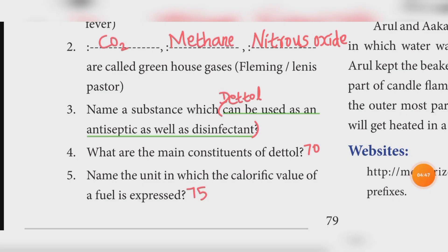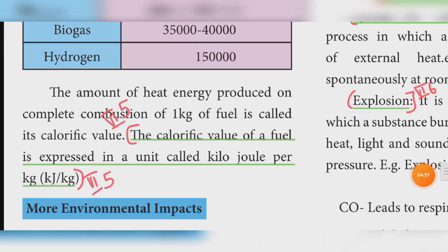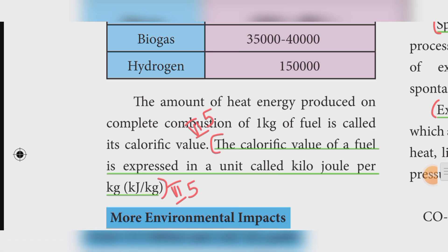Fifth one: name the unit in which the calorific value of a fuel is expressed. Refer book page number 75. The calorific value of a fuel is expressed in kilojoules per kilogram — kJ/kg.